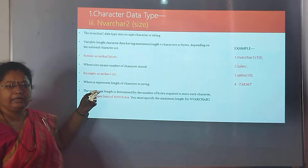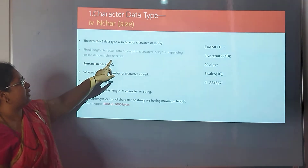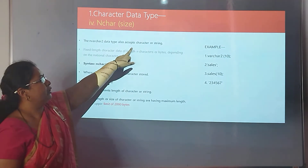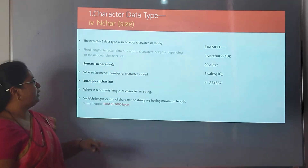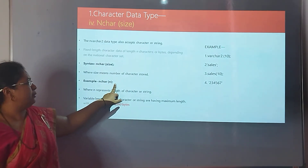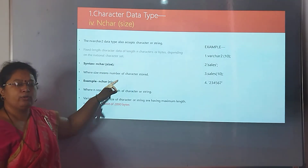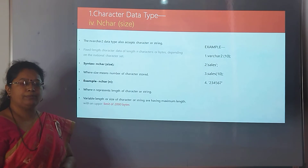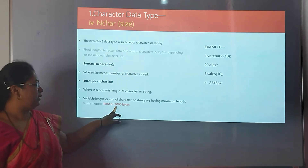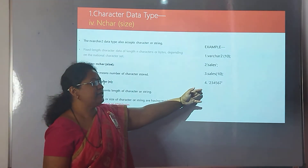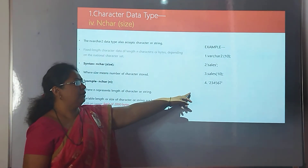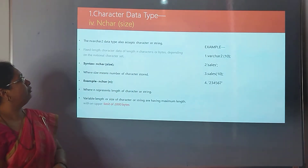The next data type is NCHAR(size). The NCHAR data type is also used to input character or string into a variable. The syntax is NCHAR(size) and the example is NCHAR(n), where n means the size or limit of data stored in that variable. The maximum data stored is 2,000 bytes. These examples are similar to the CHAR or VARCHAR2 data types.